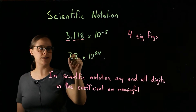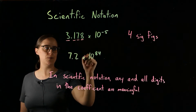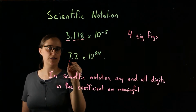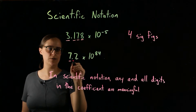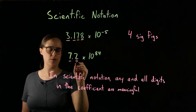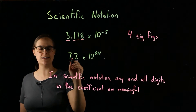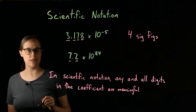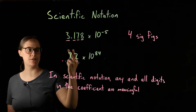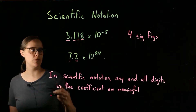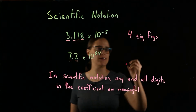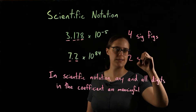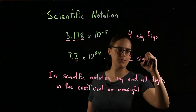Our second value, 7.2 times 10 to the 84. Again, we are just looking at the coefficient. The 7 and the 2 are the only digits in the coefficient. They are both significant. We have 2 significant figures.